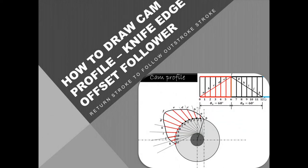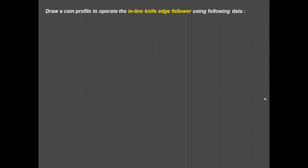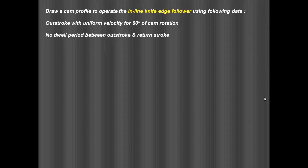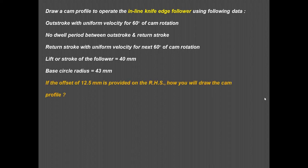In this video we'll see how to draw a cam profile in the case of an offset knife edge follower. We have to draw a cam profile to operate the inline knife edge follower using the following data: out stroke with uniform velocity for 60 degrees of cam rotation, no dwell period between out stroke and return stroke, return stroke with uniform velocity for the next 60 degrees, lift or stroke of the follower is 40 mm, base circle radius is 43 mm, and an offset of 12.5 mm provided on the right-hand side.